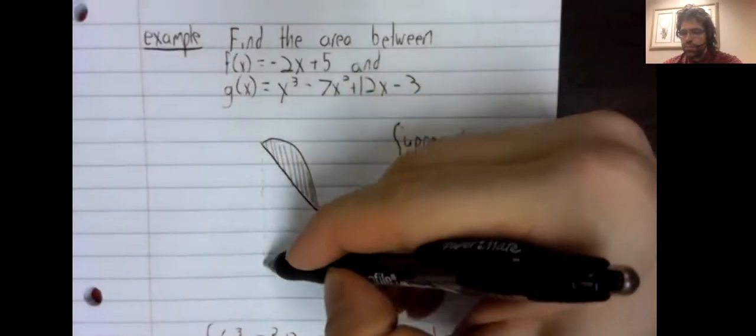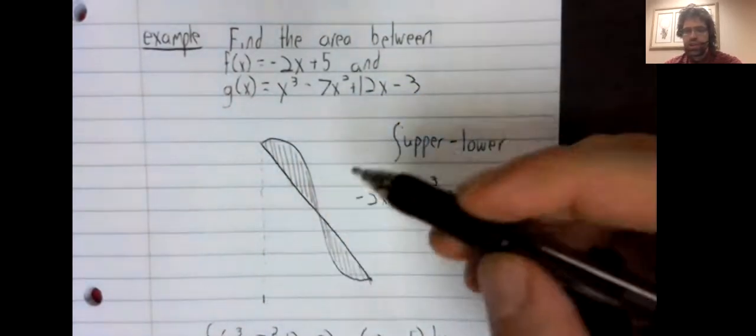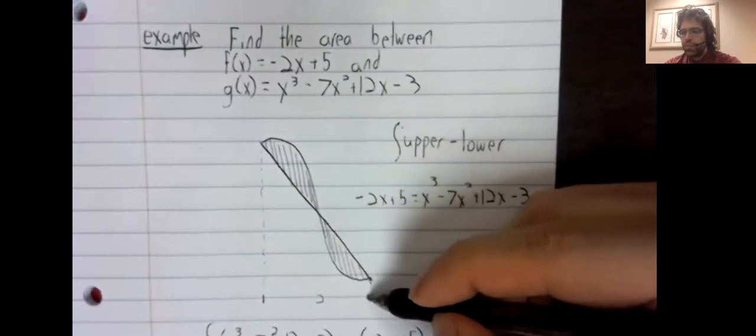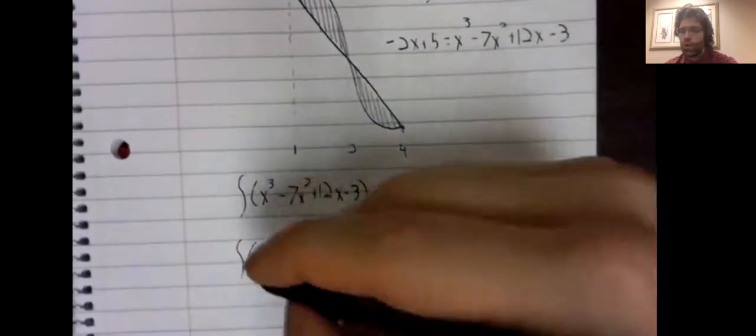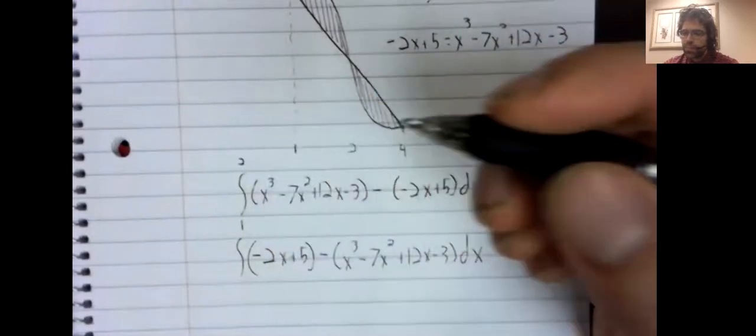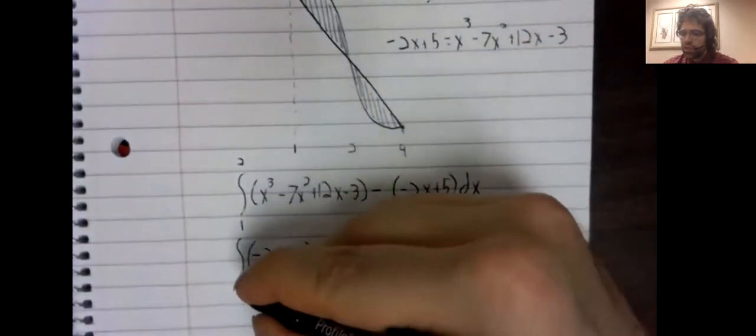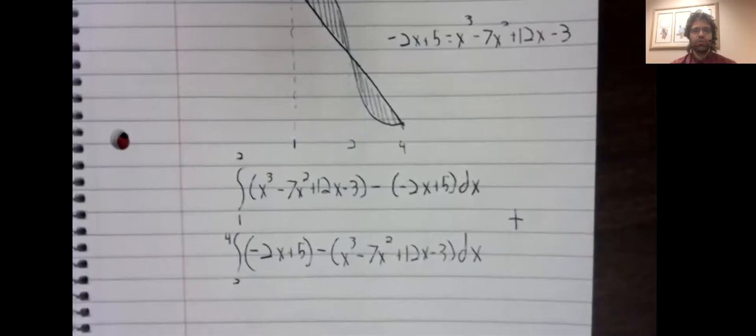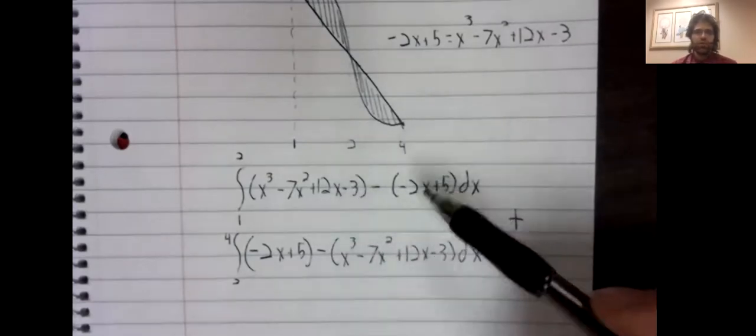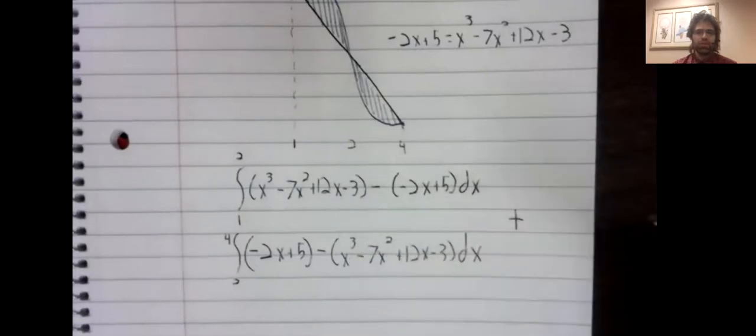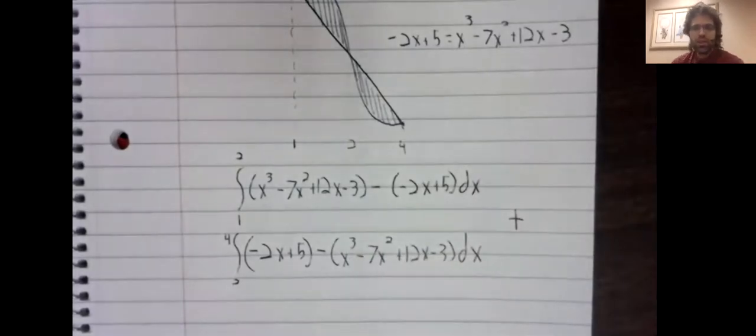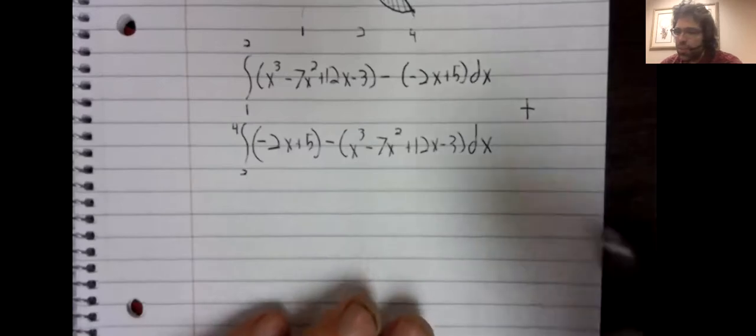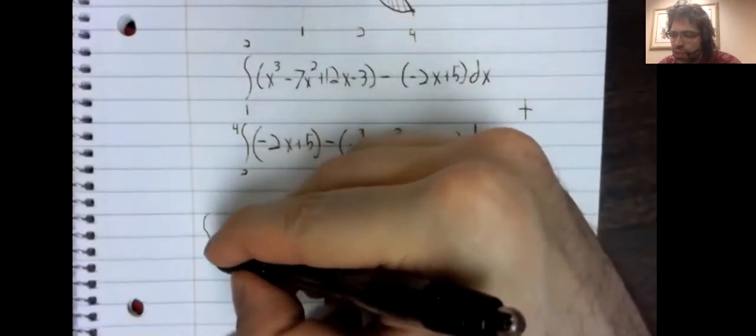So the first point of intersection is one, the second is two, the third is four. Our limits of integration are now known to us. We have to compute this integral and this integral, and this is not going to be the funnest thing, but it should at least be straightforward.